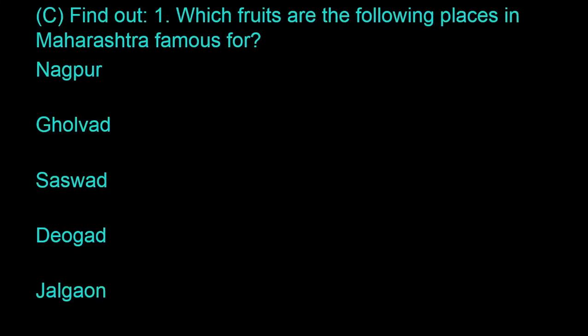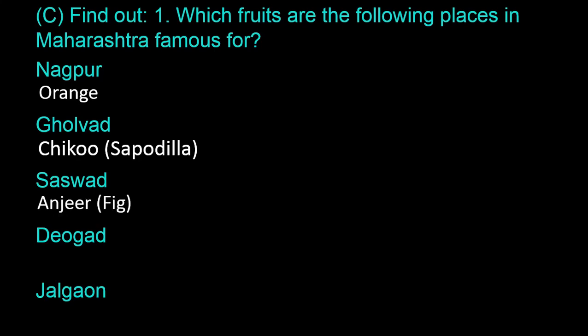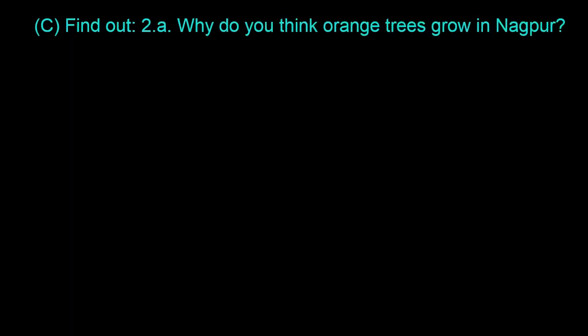Next question is Question Number C, Find Out. 1. Which fruits are the following places in Maharashtra famous for? Nagpur is famous for orange. Golwad is famous for Chiku (sapodilla). Saswad is famous for fig. Devjit is famous for Alphonso mango. Jalga is famous for banana. This question is based on data collection and class activity. I have written a few points based on my search. You can have your own points or add more points to the list.